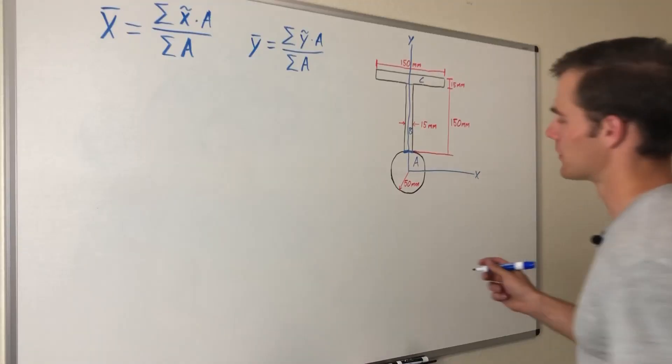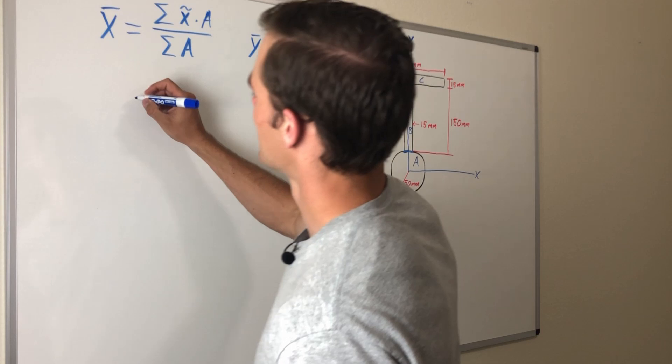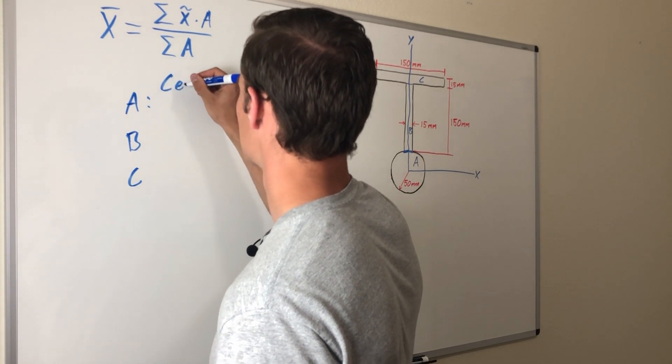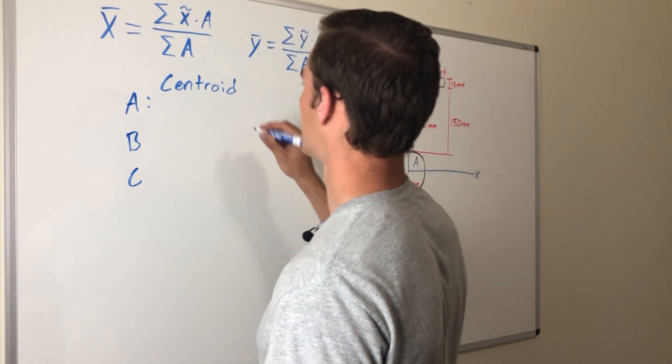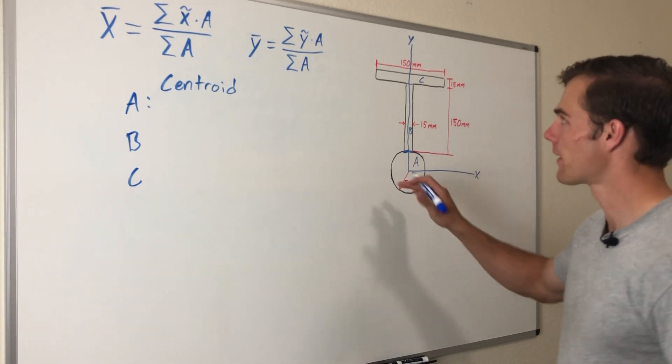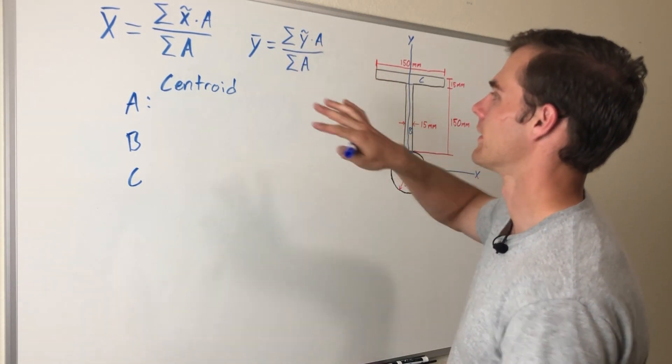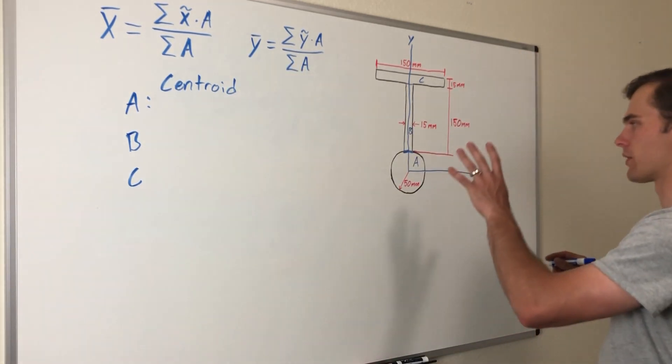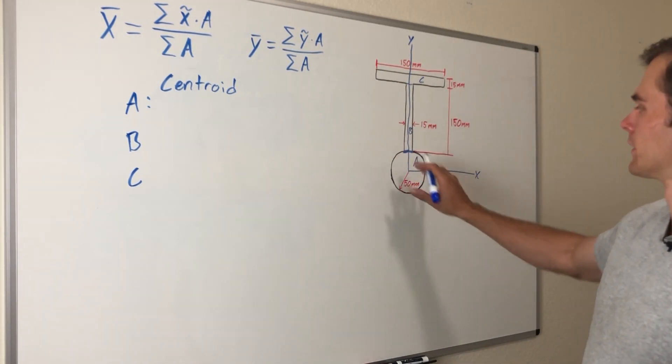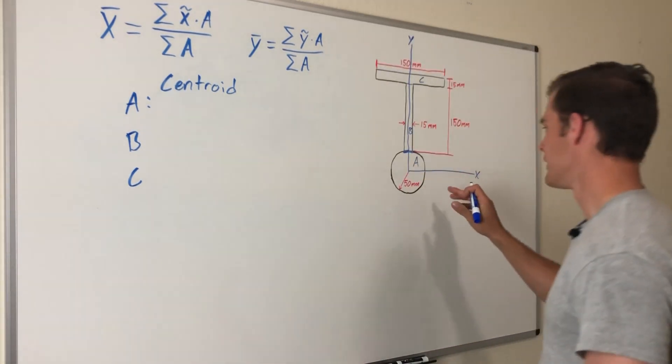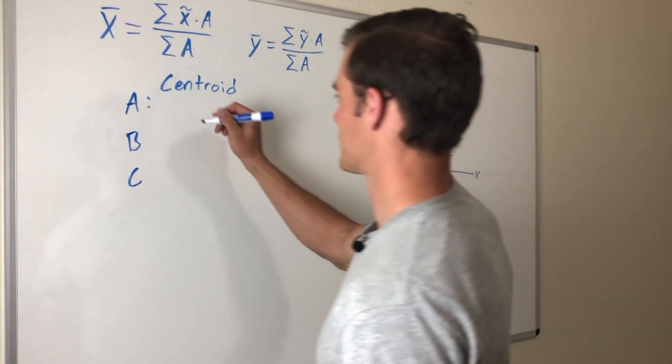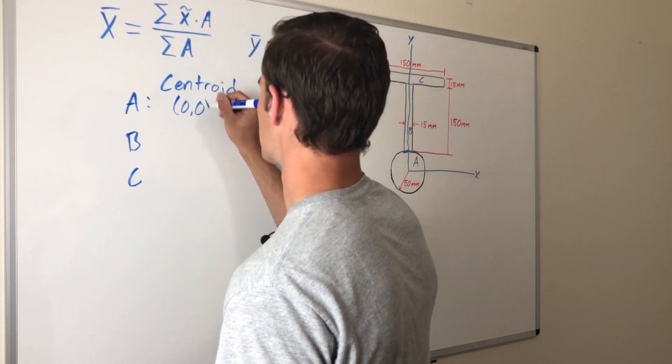We're going to have A, B, and C. Now we want to find the centroid of each of those composite parts based on this coordinate system. The centroid of each composite part is x̃ and ỹ. x̄ and ȳ are the coordinates of the entire object, and x̃ and ỹ are of each individual component. The centroid of A, we set up our coordinate system so the centroid of A is at the origin, so at (0,0).